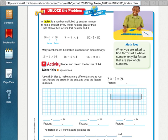Now a factor, it says here, is a number multiplied by another number to find a product. Every whole number greater than 1 has at least 2 factors, that number and 1. So if we have this problem right here, 1 times 18 equals 18, the product is 18, the factors are 1 and 18.